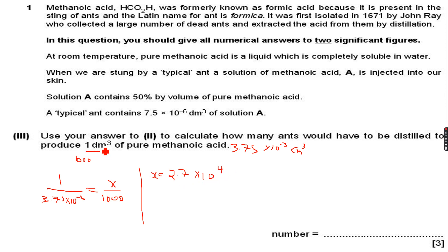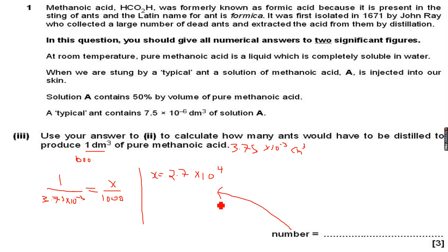So 2.7×10⁴ is the number of ants that would be needed to form 1000 centimeter cube, or 1 dm cube, of pure methanoic acid. That's the answer — 2.7×10⁴ ants. Let's move further.